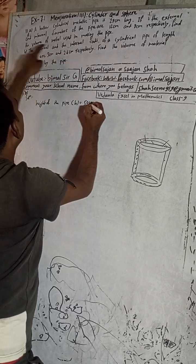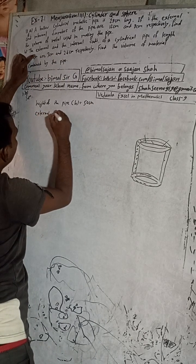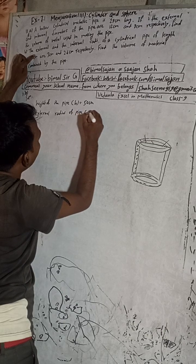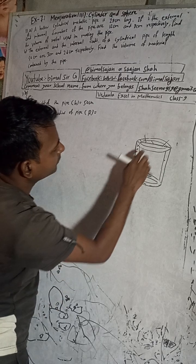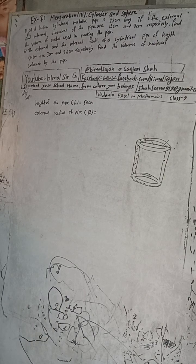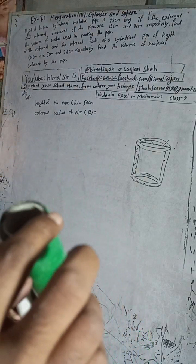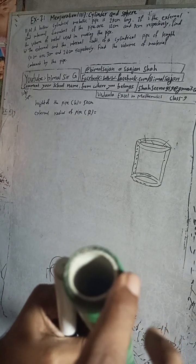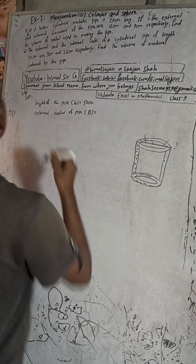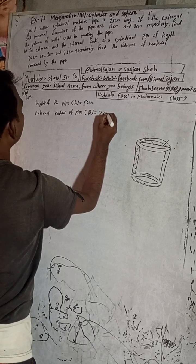External and internal are given respectively — first is external, second is internal. External radius means capital R, the bigger R, from the center to the outside. Internal radius is from the center to the inside. So external radius R equals 3 cm, and internal radius r equals 2.6 cm.